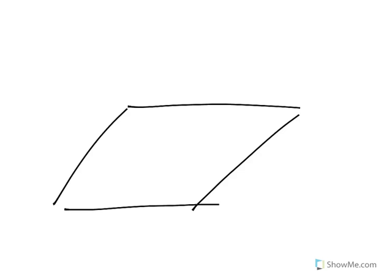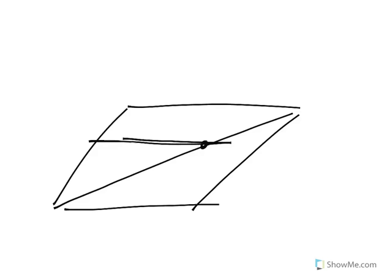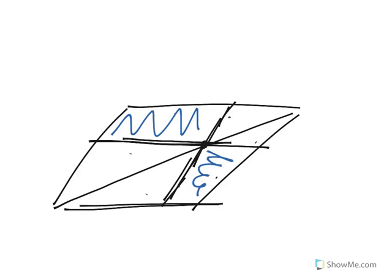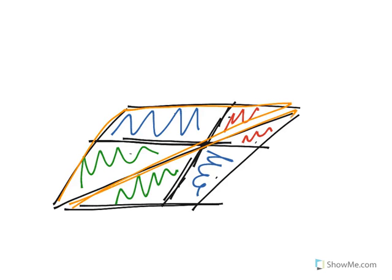If I take a parallelogram, draw a diagonal, pick any point on that diagonal, and draw lines parallel to each pair of sides, I separate the figure into four triangles and two parallelograms. These parallelograms are not congruent, but they do have the same area — because these two triangles are congruent by SSS, these two triangles are congruent by SSS, and these large triangles are congruent by SSS. If you subtract the red and green triangles from the yellow large triangles, you end up with the two parallelograms having equal area.